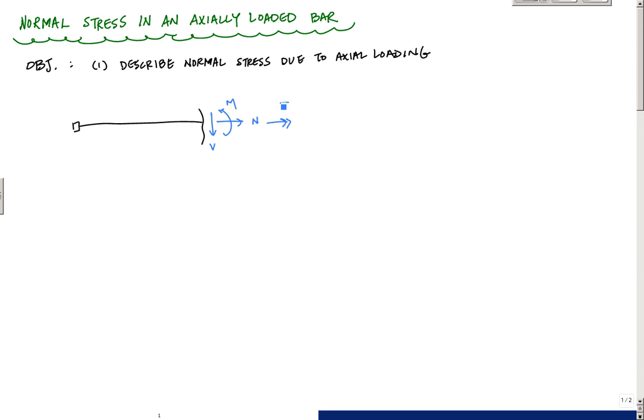An axially loaded member, or one where there's only an axial load involved, essentially means that the moment is zero, the torque is zero, and the shear is zero. The only thing that's not zero is this normal force N. So the structural element is either only being pulled in tension or compressed.